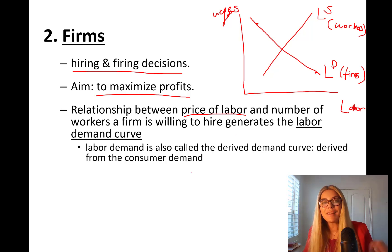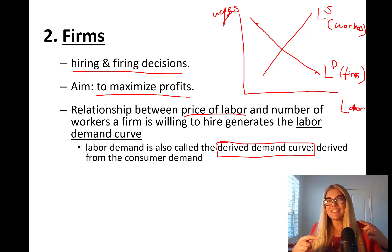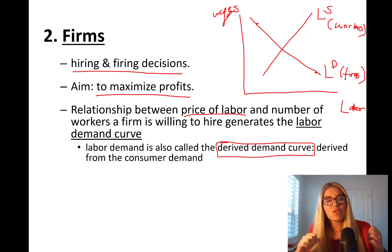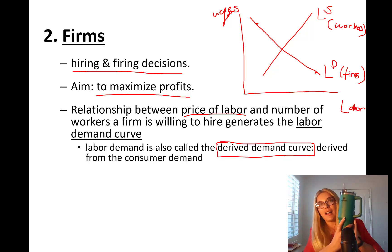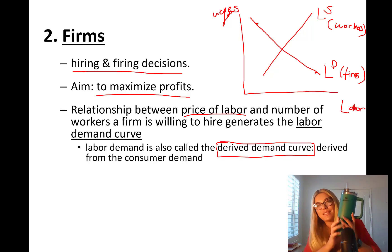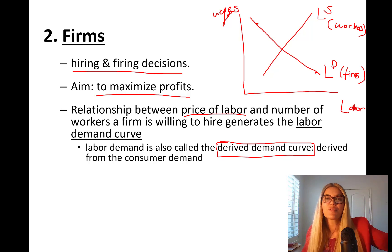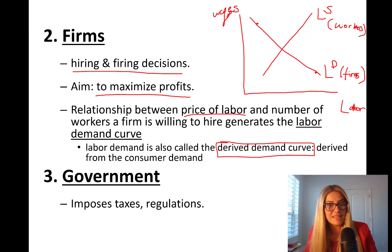The labor demand curve is also called the derived demand curve. This means I will demand labor only if there is demand for my product. For example, if I'm the producer of a Stanley Cup water bottle and nobody wants it, I'm not going to hire anyone. My demand for labor is derived from consumer demand. This is a concept that will likely appear on tests and quizzes.